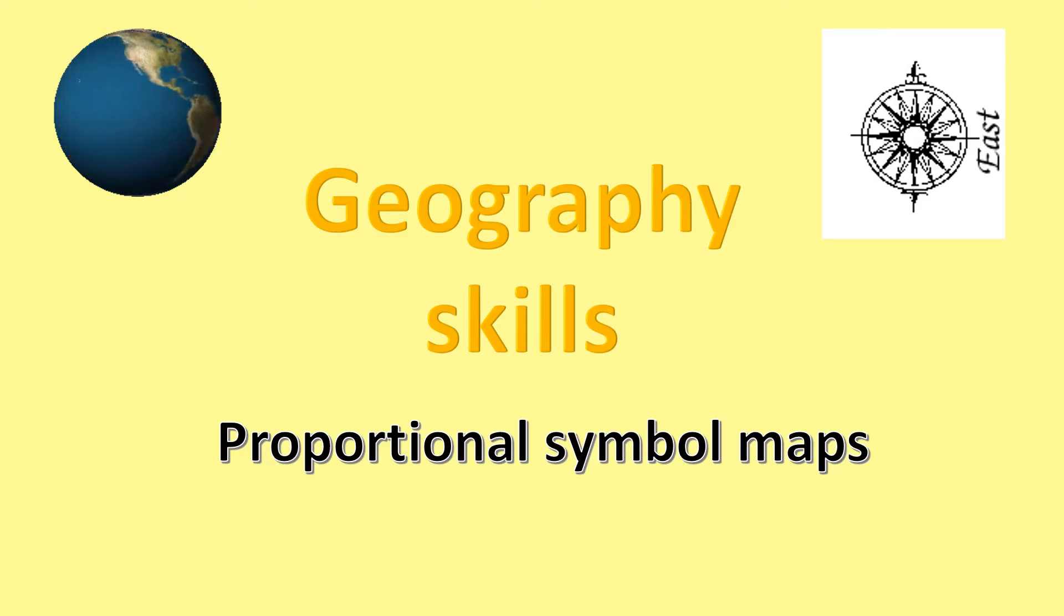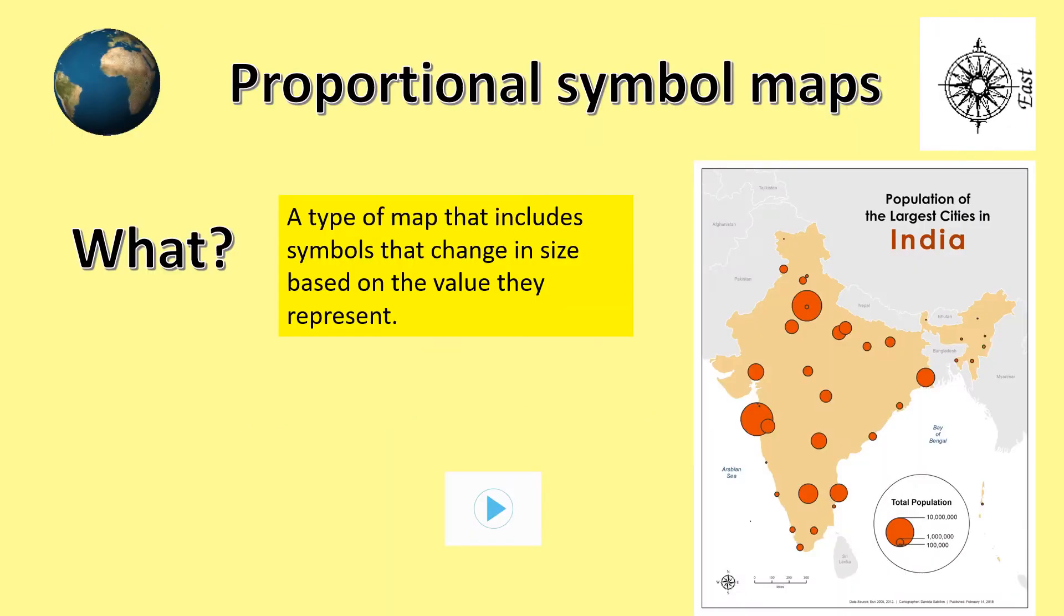This geography presentation is all about how to understand what proportional symbol maps are and how best to interpret them. Proportional symbol maps are a specific way of displaying data about regions or countries. They are a type of map that includes symbols that change in size depending upon the value they represent. An example of one is shown here.